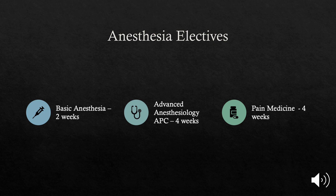For anesthesia electives there is basic anesthesia, advanced anesthesia, and pain medicine. If you're thinking about going into anesthesiology, I would strongly suggest doing the four-week advanced anesthesiology elective — it counts as one of your APCs and is strongly preferred over the basic elective. There are lots of sites available, but keep in mind that the UW system usually doesn't have openings in July because that's when new anesthesia residents are starting, so plan accordingly when scheduling your fourth year.